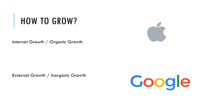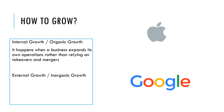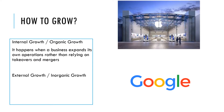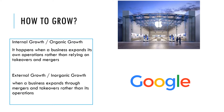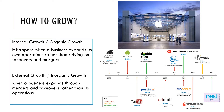Businesses often want to grow, but a key question they have to ask is how they're going to go about doing it. Broadly speaking, businesses have two options. The first is internal growth, where a business goes it alone and expands its own operations — a good example would be Apple, who have invested heavily in their own research and development. The alternative is external growth, where a business expands by merging or taking over other businesses — a good example would be Google, who have acquired lots of smaller businesses and incorporated them.